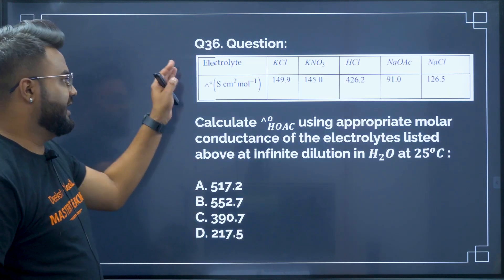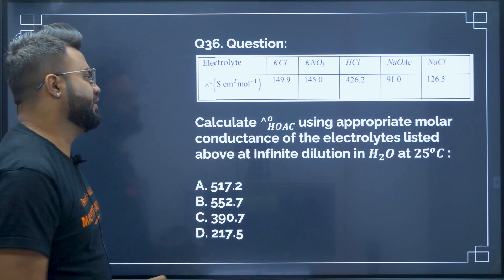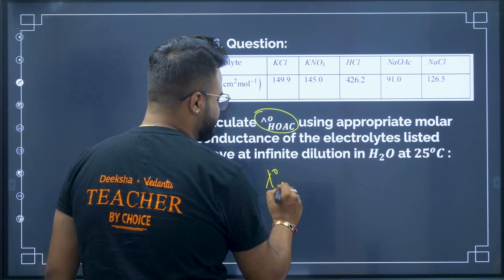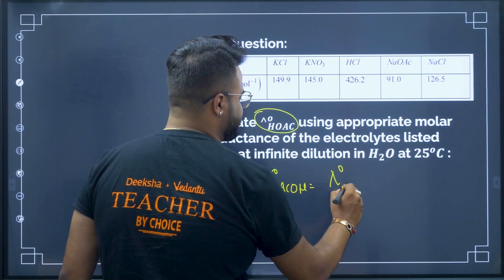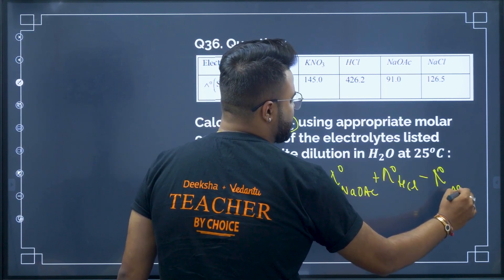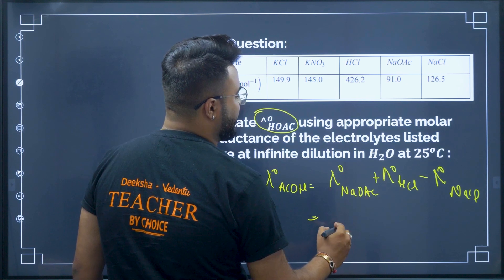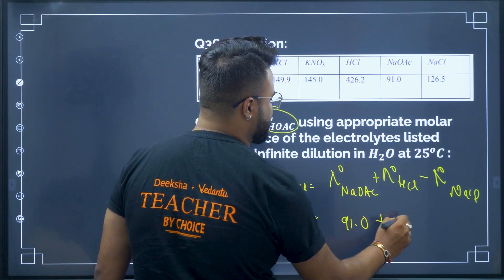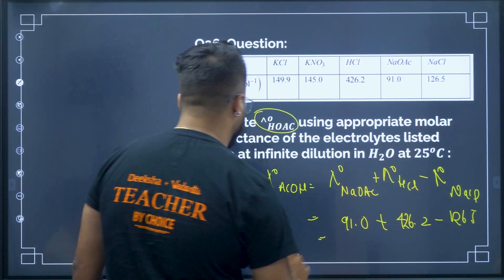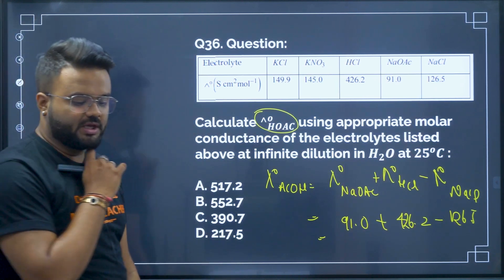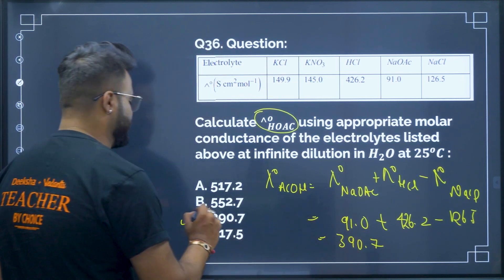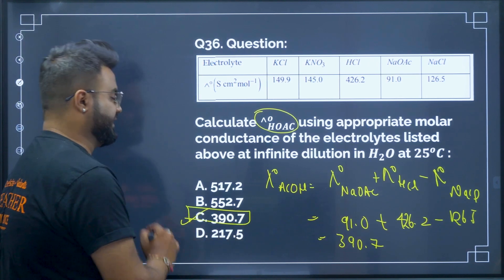Question number 36: given the electrolyte and limiting molar conductivity, we have to find the limiting molar conductivity of acetic acid. Acetic acid: Λ°(AcOH) = Λ°(sodium acetate) + Λ°(HCl) − Λ°(NaCl). That is 91.0 + 426.2 − 126.5 = 390.7 S·cm²/mol. Therefore option C will be your correct answer.